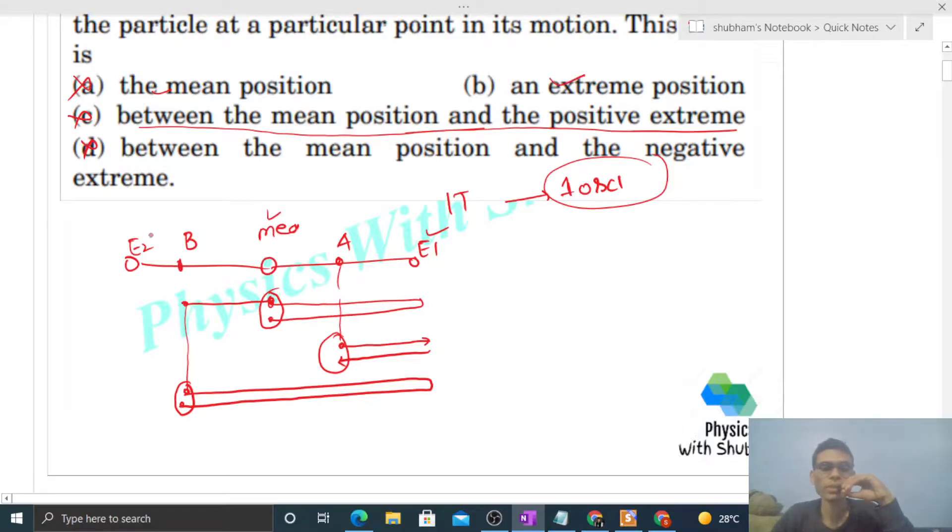And extreme position. Now we take E2, the extreme position. Then particle starts from E2, goes to mean position, goes to the other extreme, then comes back through mean position to the extreme. So here one oscillation is complete. It means this is the time for one time period. From extreme back to extreme is one time period, so option B is correct.